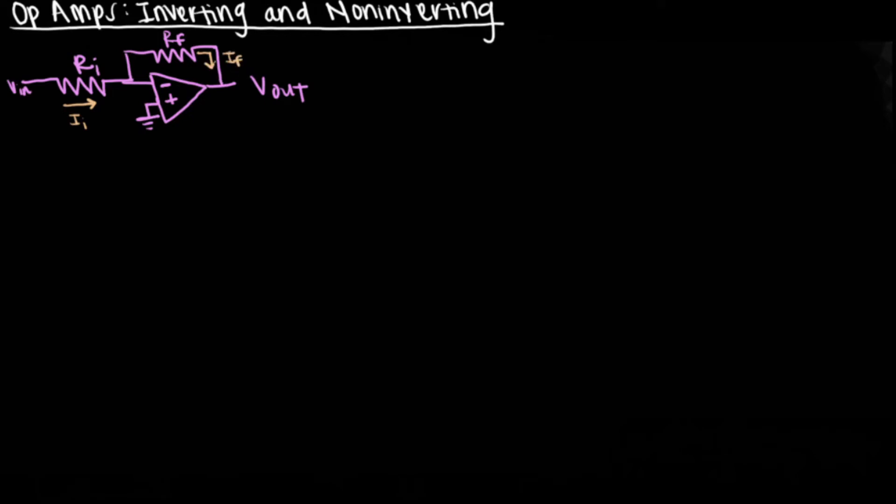Inverting amplifiers have a negative gain because the voltage input is to the inverting input. The circuit shown here is a basic example that we can easily follow to see how the gain is negative. As we've discussed, the voltage inputs are the same in an ideal op amp. Since the non-inverting input is connected to ground, the voltage is zero.